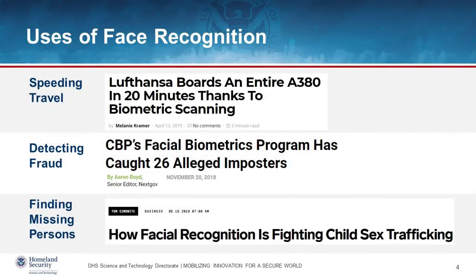On this slide, we have examples of headlines talking about the use of facial recognition technologies in various real-world applications. These technologies can be used as part of the travel continuum to help improve traveler experience and speed up queues. They can be used for law enforcement applications in detecting imposters or combating identity theft, and also to help identify missing persons, including combating child sex exploitation and trafficking.